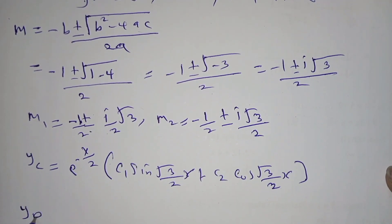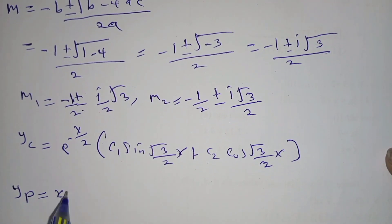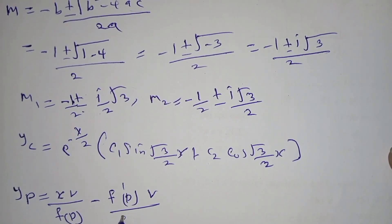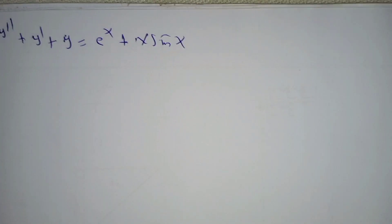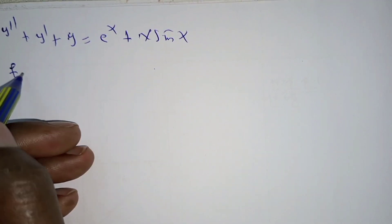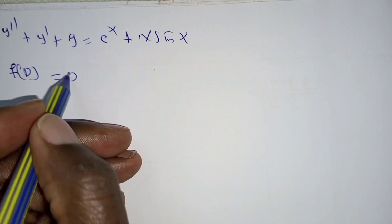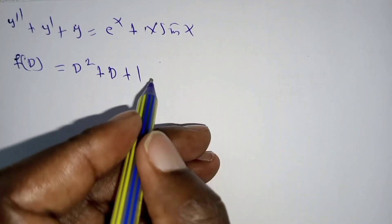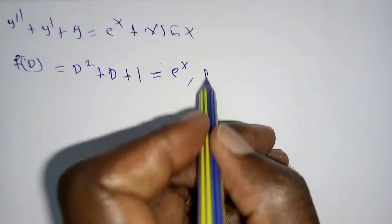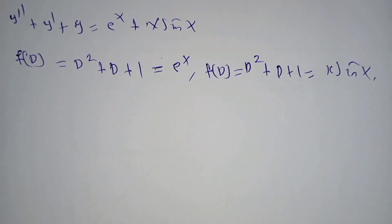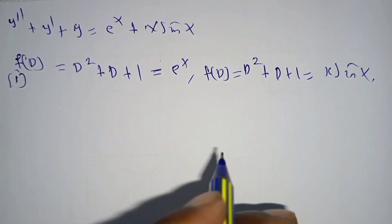Now to get Y particular, the general operator formula is: x·V / F(D) minus F′(D)·V / [F(D)]². The right-hand side is expressed in symbolic form where F(D) = D² + D + 1. This has two parts: part 1 equals e^x, and part 2 has F(D) = D² + D + 1 applied to x·sin(x).